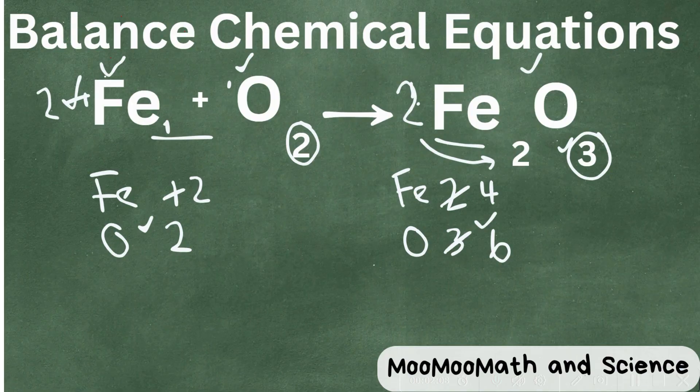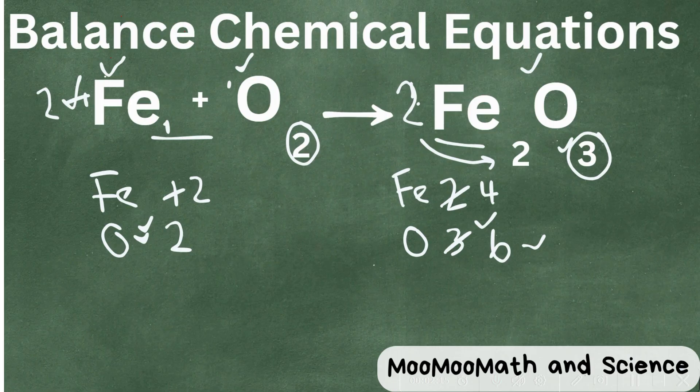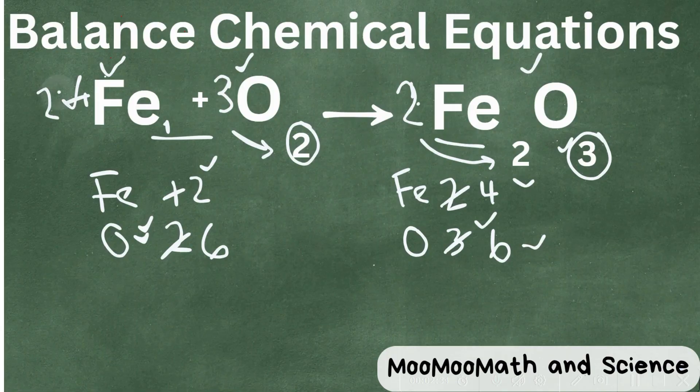But now look at our oxygen. We have 2 on this side and 6 on this side. So why don't we do this? Let's go ahead and multiply oxygen by 3, put a coefficient of 3 in front. 3 times 2 is 6. So we're getting close. We now have the oxygen, but now look at the iron. We have a 2 and a 4, and we can easily fix this by changing this coefficient of 2 to a 4. 4 times 1 is 4.